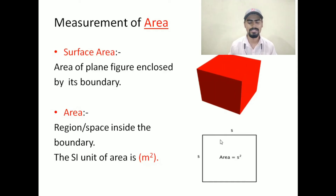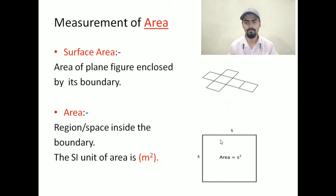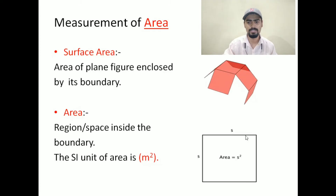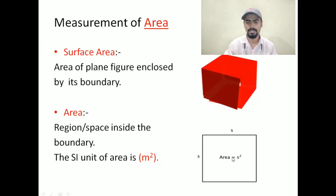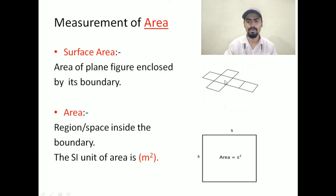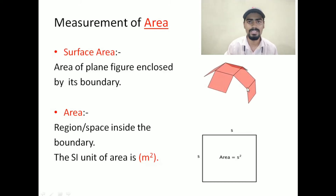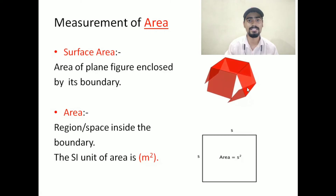But when we are talking about the surface area, we are not dealing only in the two dimensions — we are dealing with three dimensions. As you can see in the figure, when we open the box, there are a total of six faces. One face has an area of side squared (S²). So how many faces are there? In this case, total six faces are there. So what will be the surface area? Six S squared.